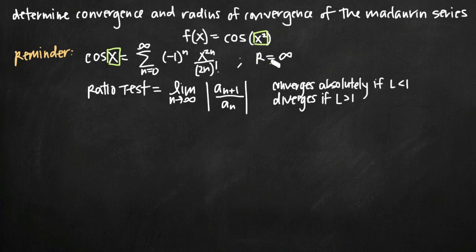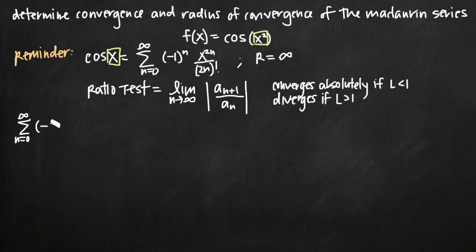It's also important to note that the radius of convergence for cosine of x is infinity. So in order to determine whether cosine of x squared is also convergent and to find its radius of convergence, we'll substitute x squared in place of x into the well-known sum for cosine of x. We'll write the sum from n equals 0 to infinity of negative 1 to the n, and in place of x we substitute x squared, giving x squared raised to the 2n divided by 2n factorial.